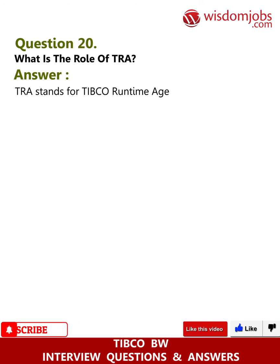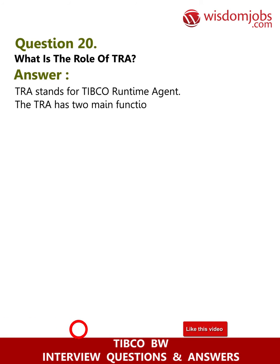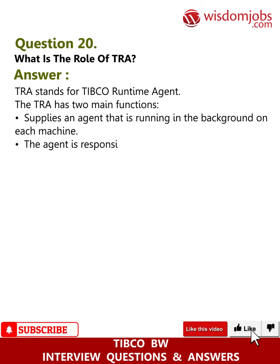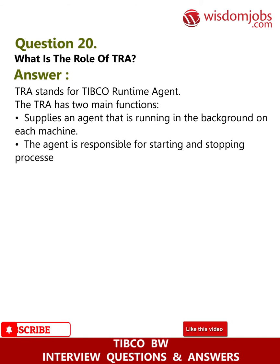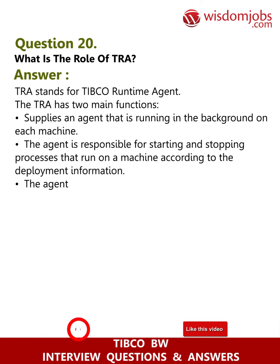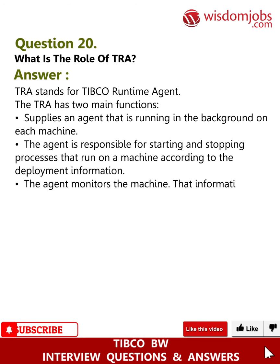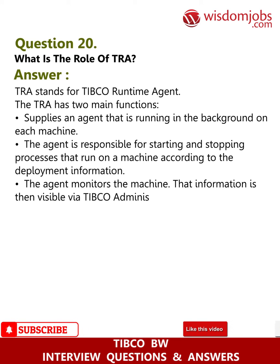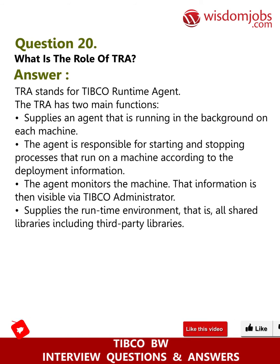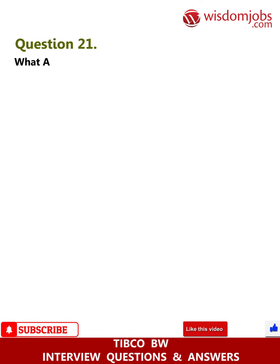Question 20: What is the role of TRA? Answer: TRA stands for TIBCO Runtime Agent. The TRA has two main functions. First, it supplies an agent running in the background on each machine. The agent is responsible for starting and stopping processes that run on a machine according to the deployment information, and the agent monitors the machine — that information is then visible via TIBCO Administrator. Second, it supplies the runtime environment, including all shared libraries and third-party libraries.